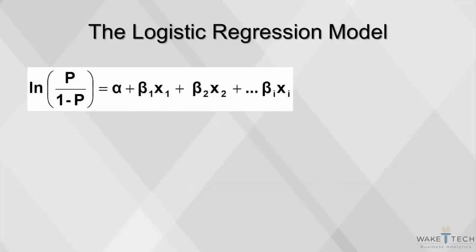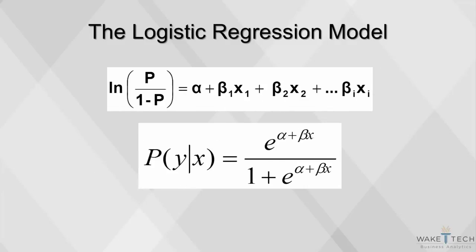With the logistic regression model, instead of winning or losing, we build a model for log odds of winning or losing. It's a natural logarithm of the odds of the outcome. P stands for the probability of the outcome, while 1 minus p stands for the probability of not getting an outcome.